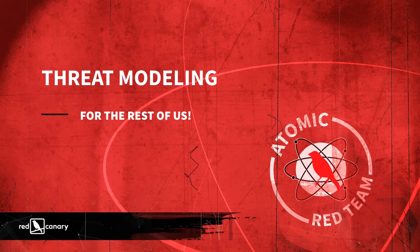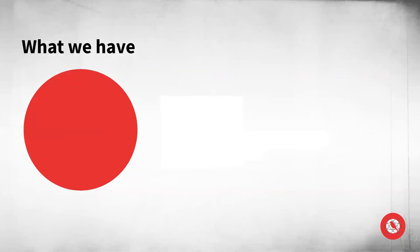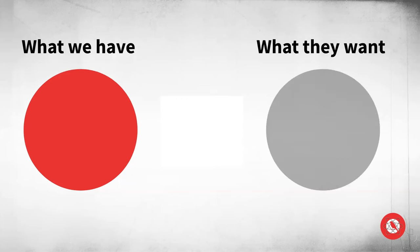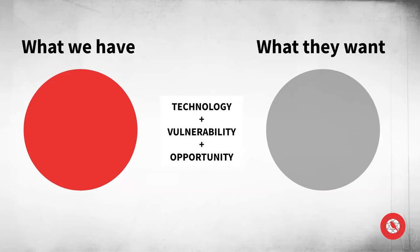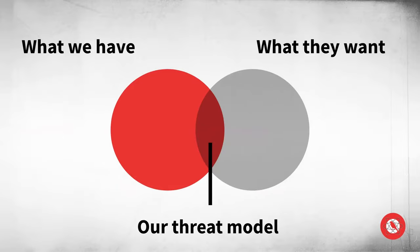The point of threat modeling is answering the question: of these thousands of tests or things an adversary might do, which ones matter? I talk about threat modeling for humans. We try to break this down simply — we've got a set of systems on our side, the adversary has things they want, and the intersection of those two is where we have technology, a vulnerability — either software or configuration — and ultimately an opportunity for the adversary to leverage what we have to get what they want. It's that simple.